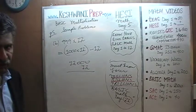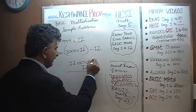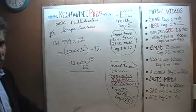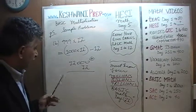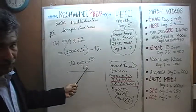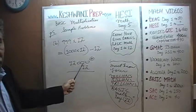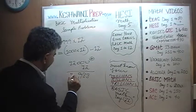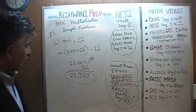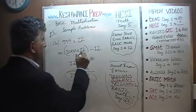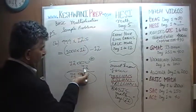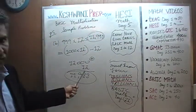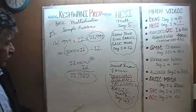In the real exam, you don't even need to compute the subtraction precisely — just realize the correct answer will be slightly less than 12,000. If you subtract 10 instead of 12, you get 11,990, which is a very good estimate. The real answer is 11,988, but 11,990 is close enough for a multiple choice exam.